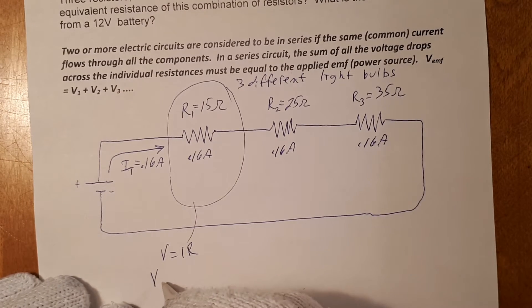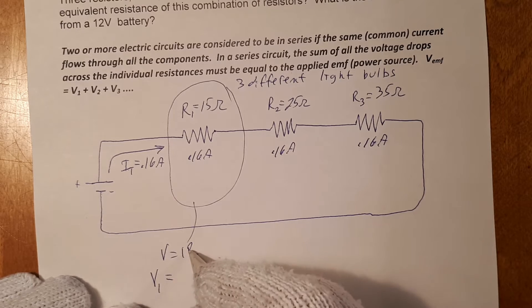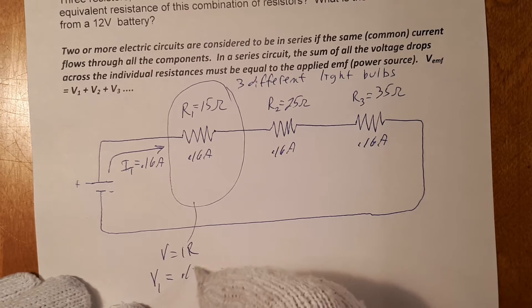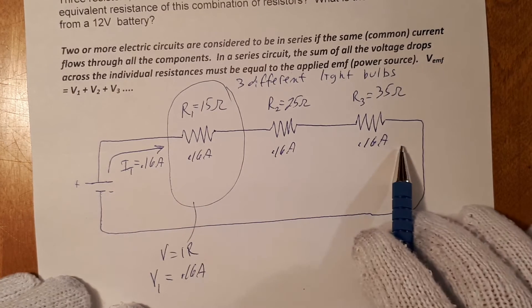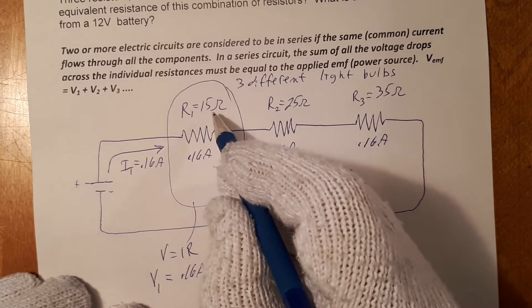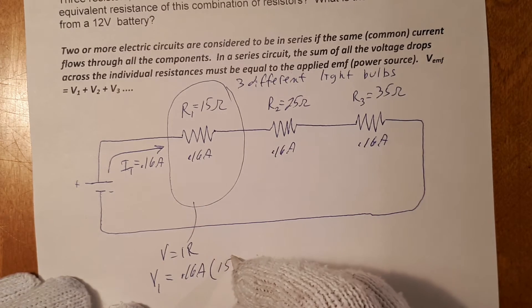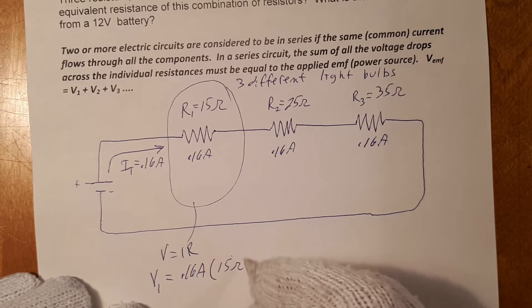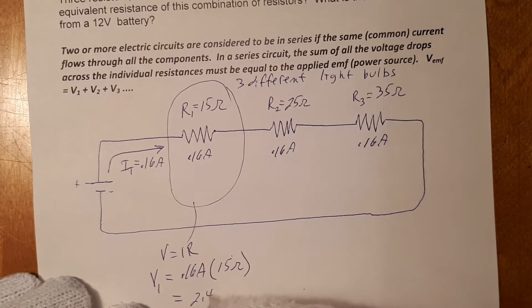And we can simply calculate the voltage drop for this little section here for this light bulb. The voltage drop, we will call this V1, is equal to the current. Current is 0.16 amps, because in a series circuit the current is the same throughout. Multiply that resistance, 15 ohms, and that is equal to 2.4 volts.